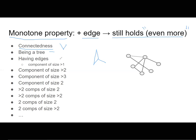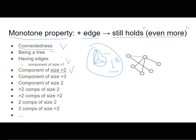Having edges: if a graph has edges and you add an edge, does it still have edges? Yes. Having a component of size more than two: if one component is larger than two and you add an edge, does it still have a component of size more than two? Yes — adding an edge may increase the component size or keep it the same, but that's a monotone property.